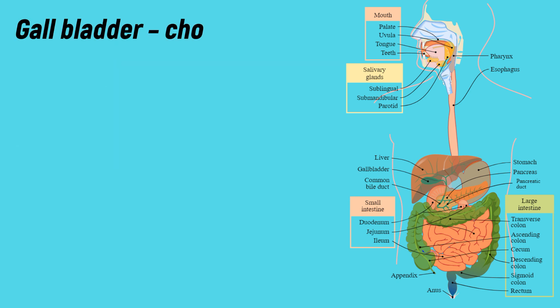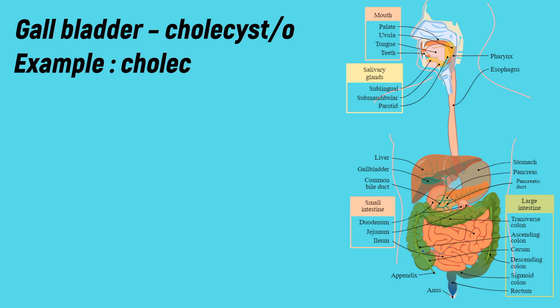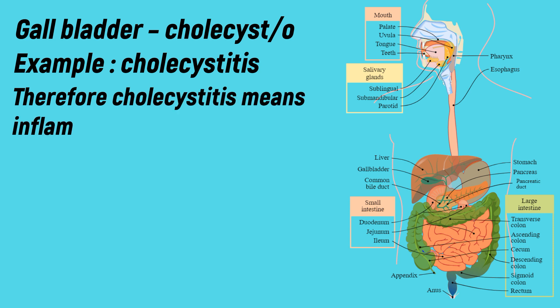Gallbladder: the medical term for gallbladder is 'cholecysto'. Example: cholecystitis. Cholecysto means gallbladder. Therefore, cholecystitis means inflammation of the gallbladder.